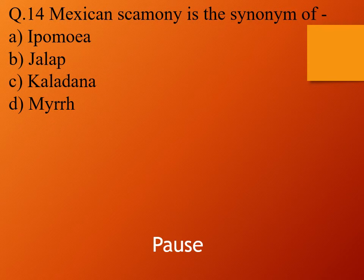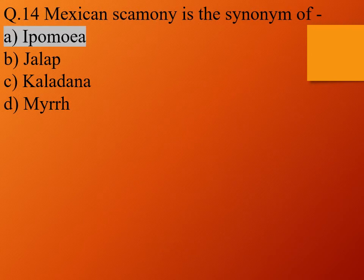Question 14. Mexican scammony is the synonym of: option A, ipomoea; option B, jalap; option C, calandra; and option D, myrrh. The right answer is option A, ipomoea. So Mexican scammony is the synonym of ipomoea.